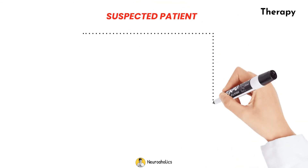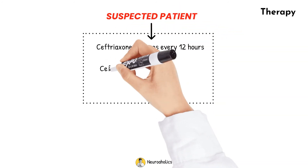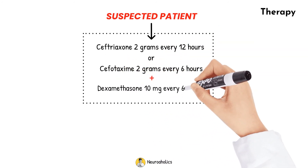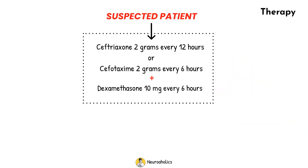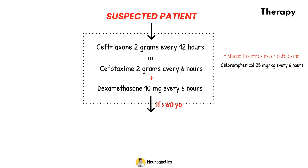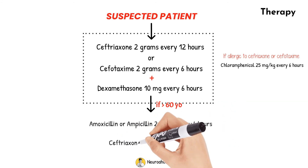In conclusion, all patients suspected of bacterial meningitis should be started on an empirical antibiotic regimen: ceftriaxone 2g every 12 hours, or cefotaxime 2g every 6 hours, and dexamethasone 10 mg every 6 hours given with or after antibiotic administration to prevent cytokine release. If the patient is allergic to ceftriaxone or cefotaxime, chloramphenicol 25 mg per kg every 6 hours should be initiated. If the patient is 60 years old or older, add amoxicillin or ampicillin 2g every 4 hours along with ceftriaxone and dexamethasone.